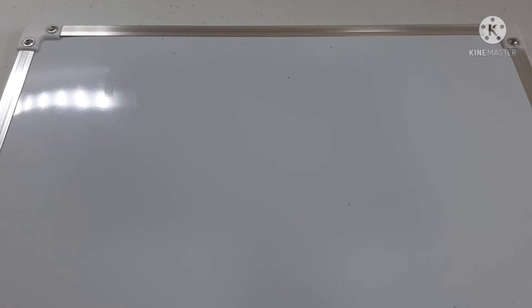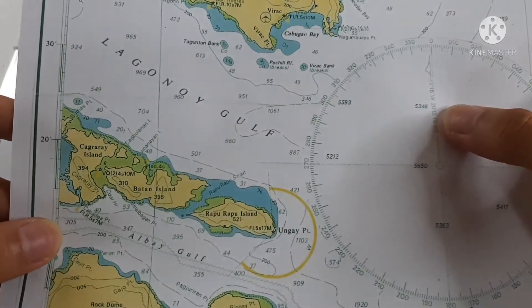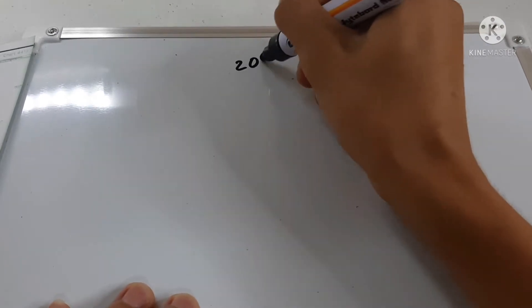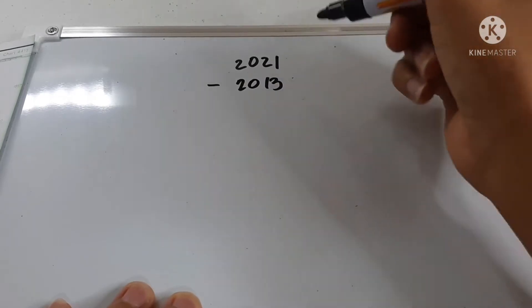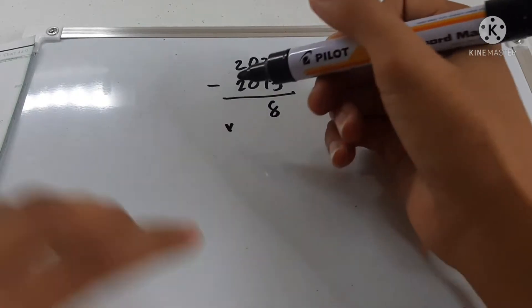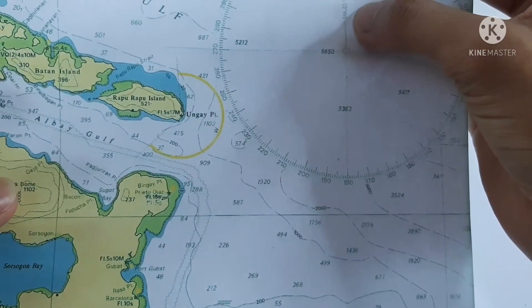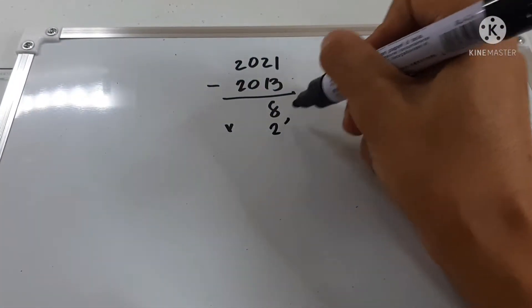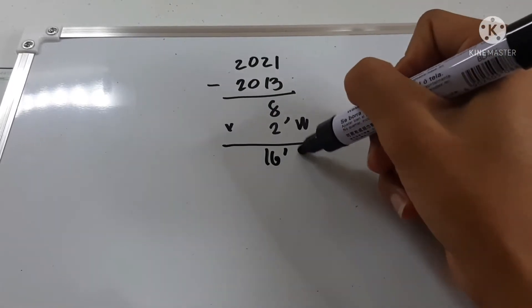The first step is to update the variation of the chart to the present year. We are in year 2021 and the year on the chart is 2013. Subtracting 2013 from 2021 gives us 8. We multiply this by the annual variation change of 2 minutes west, giving us 16 minutes west.